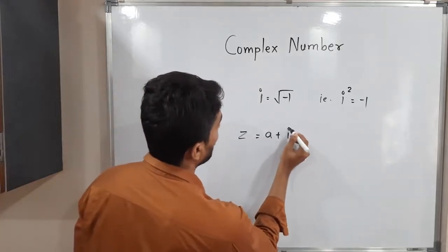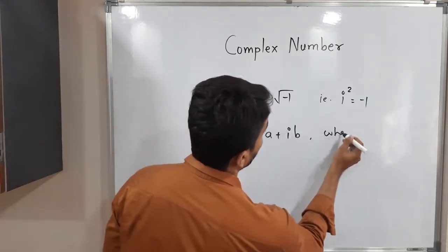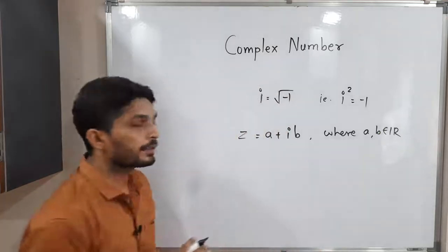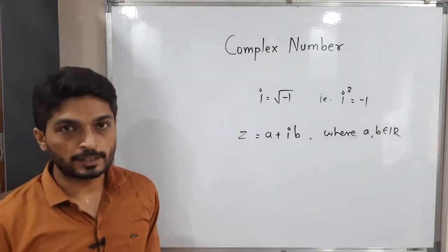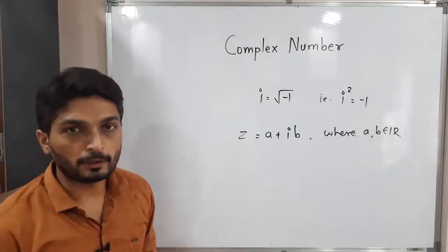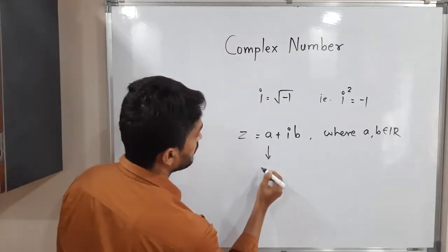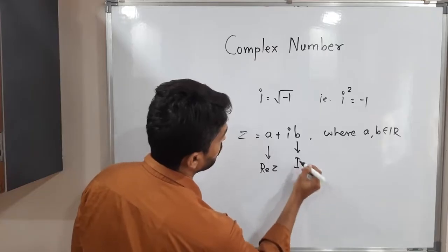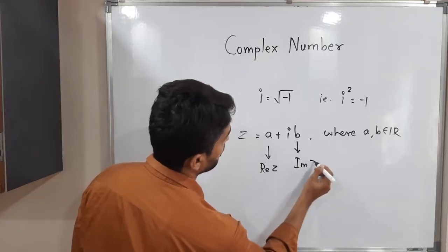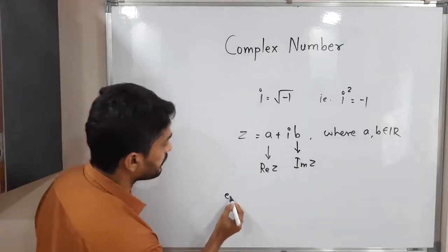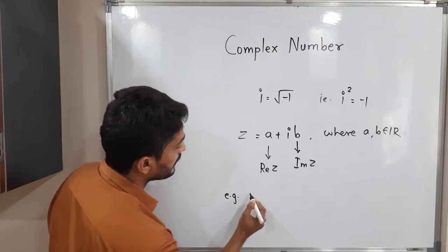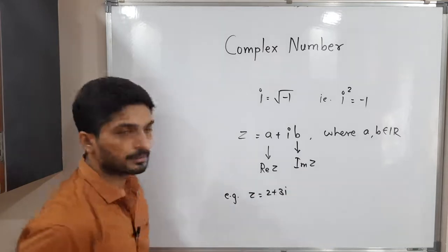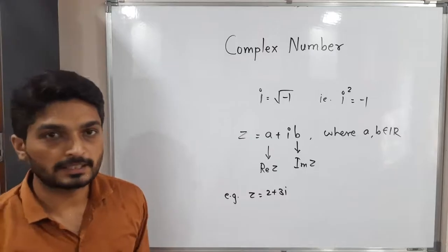The standard form of a complex number is z equals a plus ib, where a and b are real numbers. Here, a is called the real part of z and b is called the imaginary part of z. For example, z equals two plus three i is a complex number where two is the real part and three is the imaginary part.